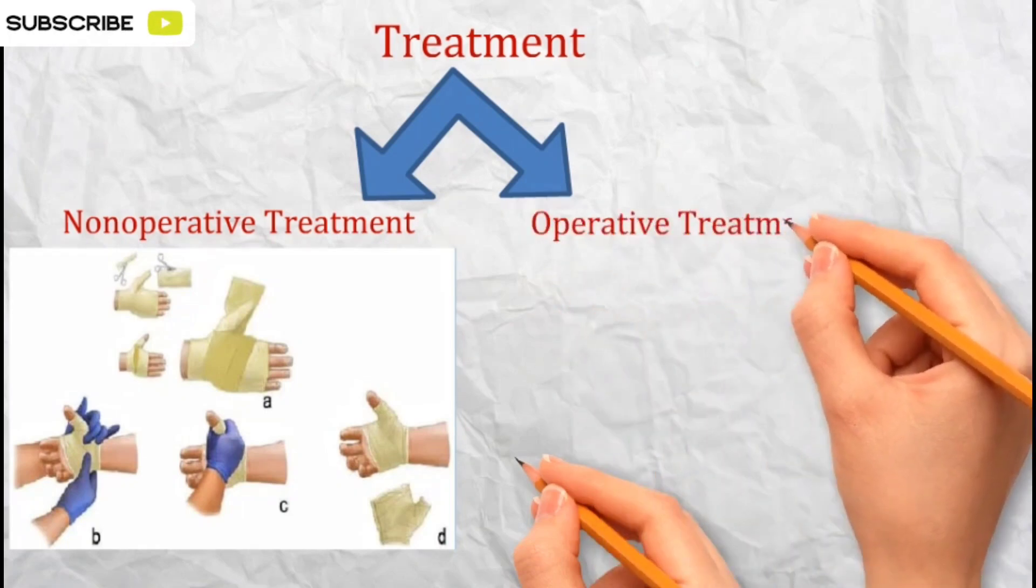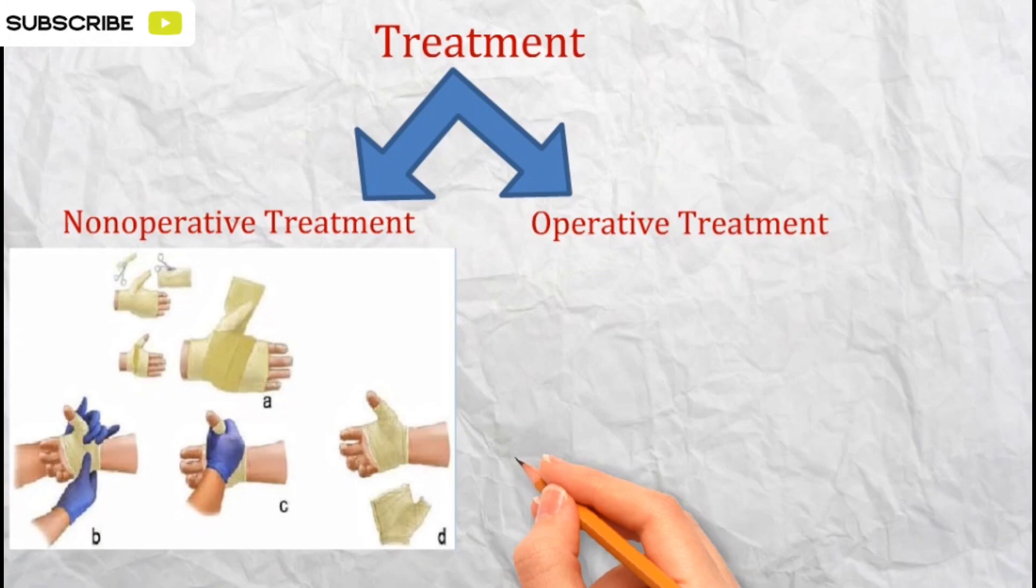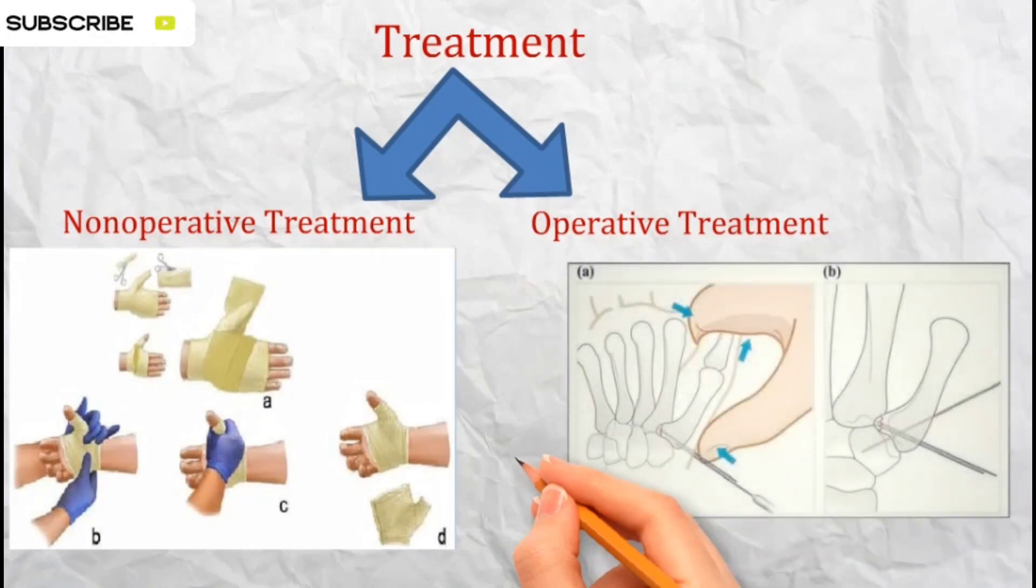Operative treatment: in cases where non-operative treatment isn't suitable, surgical intervention may be necessary. This can include closed reduction, open reduction, and fixation with K-wires. After surgery, the thumb is also immobilized in a thumb spica cast for 6-8 weeks.